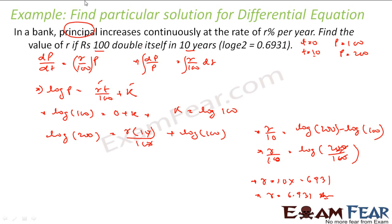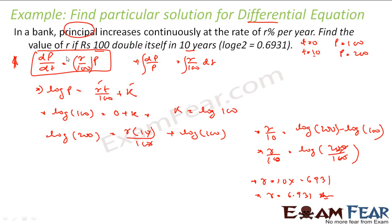What we have seen here is: the rate of change of principal, dp/dt = r/100 · p, is proportional to p. This is a differential equation and a real-life application — money growing in a bank, population growth — everything follows this pattern. Given t = 0, p = 100 and t = 10, p = 200, we found the rate of interest r = 6.931%.